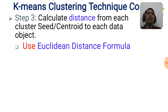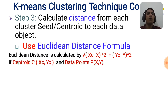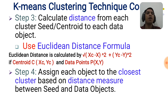Step number three: calculate the distance from each cluster centroid to each data object. For this purpose we will use the Euclidean distance formula. The Euclidean distance is calculated by the square root of (xc minus x) squared plus (yc minus y) squared, where the centroid c has coordinate (xc, yc) and data point p has coordinate (x, y).